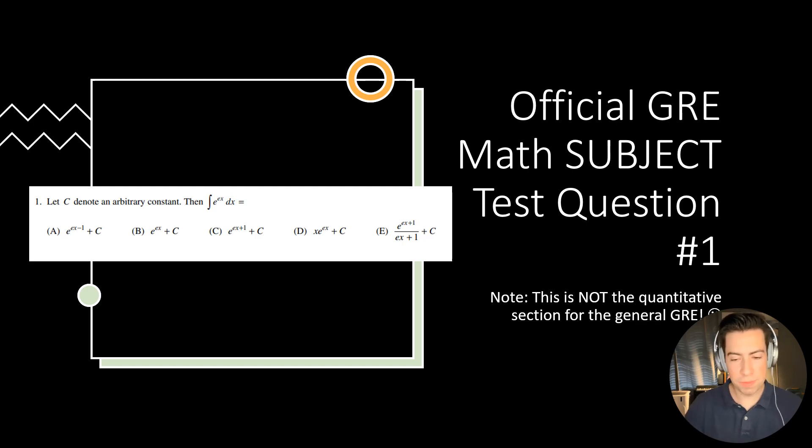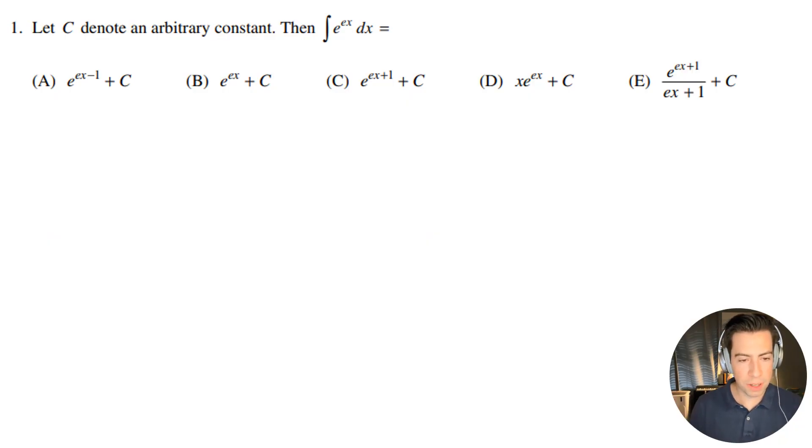Alright, question number one, let's get right into it. So we have, let C denote an arbitrary constant, then this integral e to the ex dx equals what?